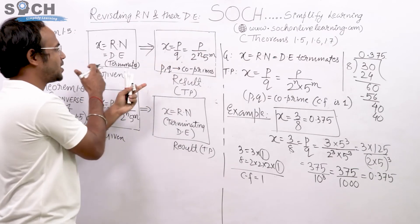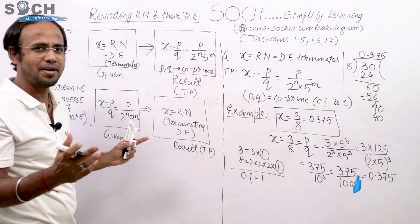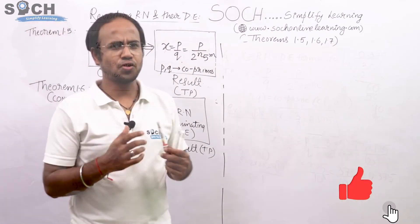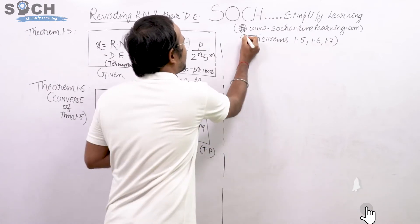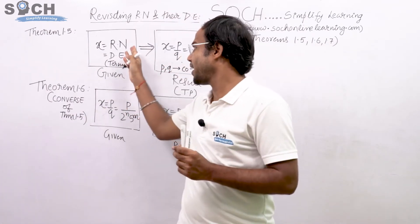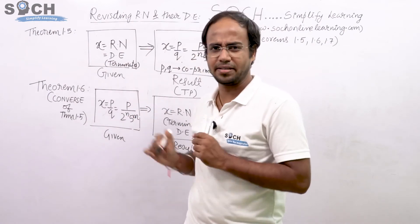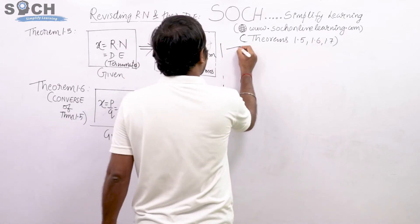First theorem, second theorem. Opposite of 1.5 is 1.6, simple and straight. My dear students, we saw these two theorems, theorem 1.5 and 1.6 in a very simple manner. By looking at these two boxes you can easily get it. Now theorem 1.7, it is just an extension of theorem 1.6.